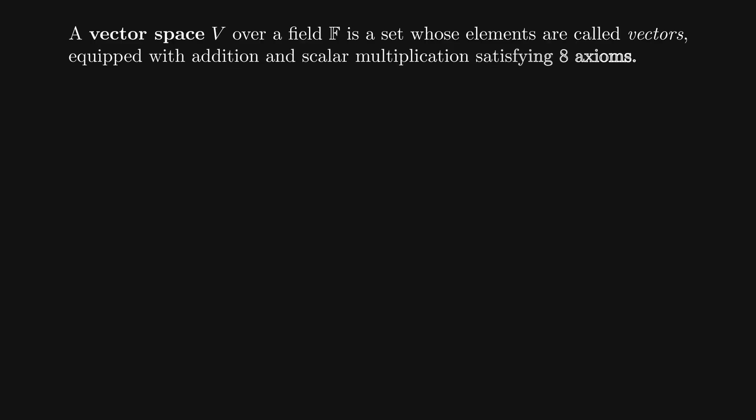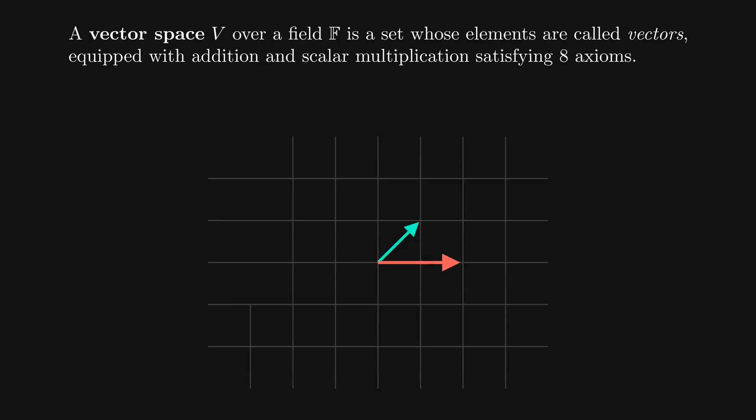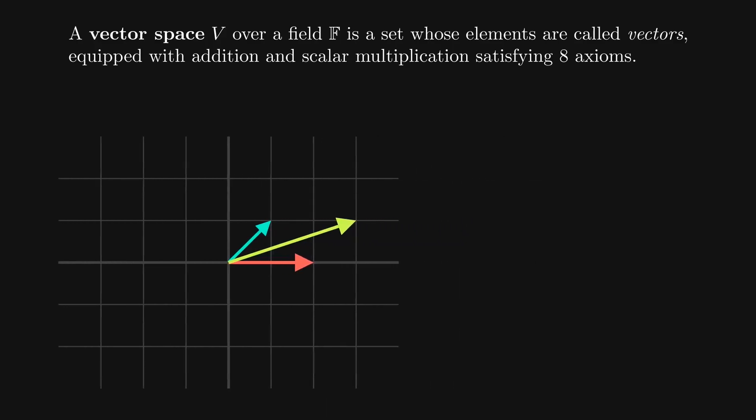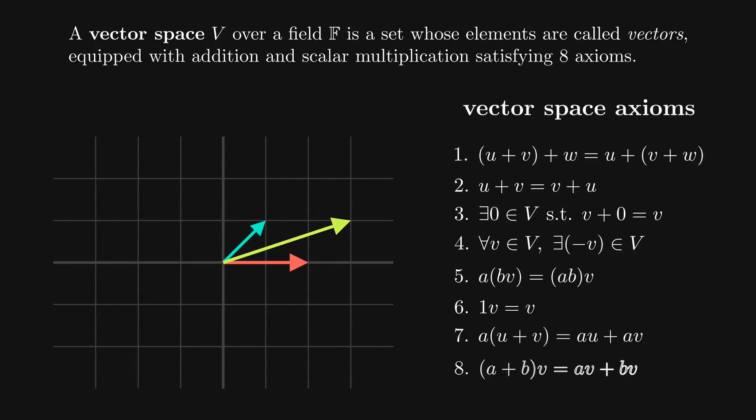In formal mathematics, however, we prefer to define objects by the properties they satisfy, and use that as our foundation. So even if it feels like a non-answer, mathematicians like to say that a vector is an element of a vector space.